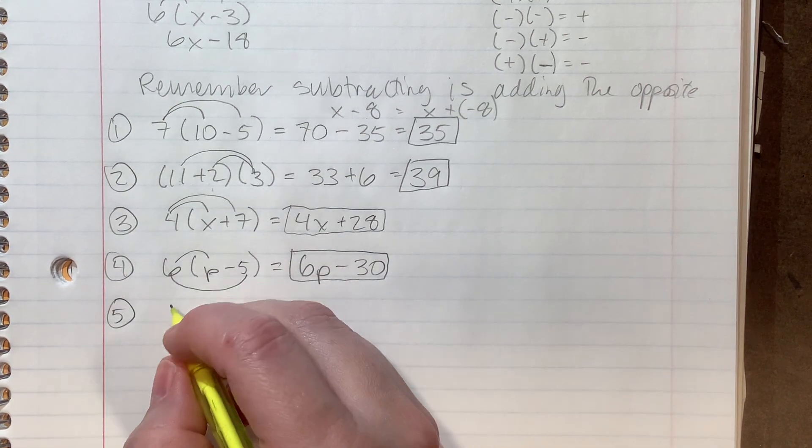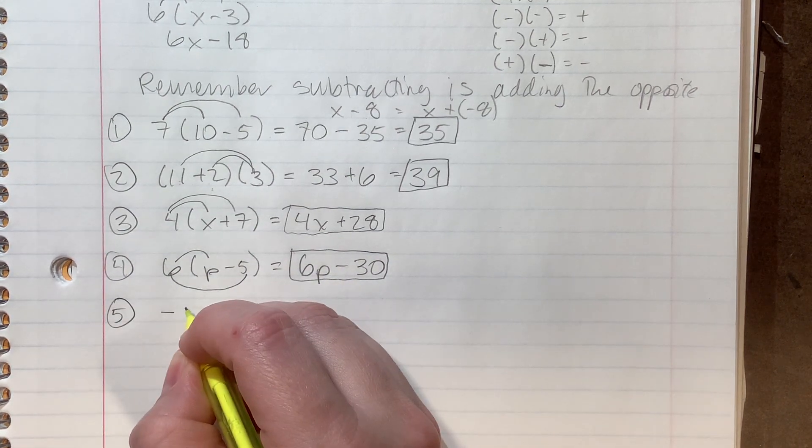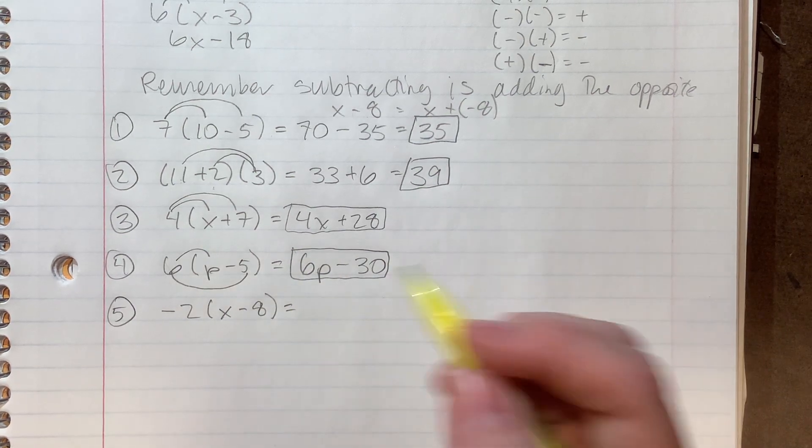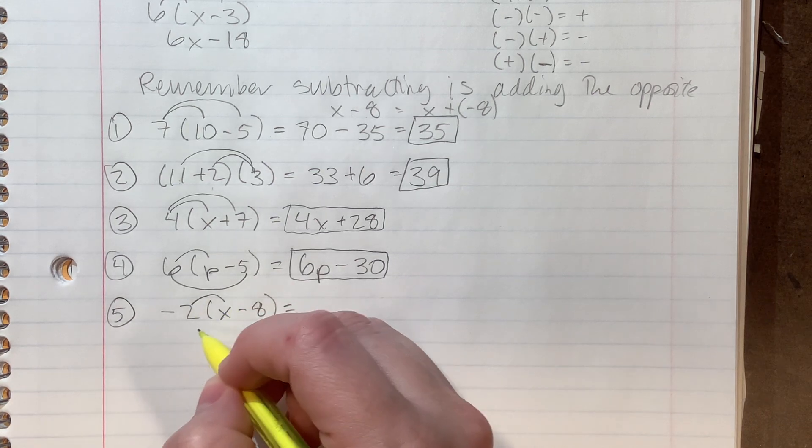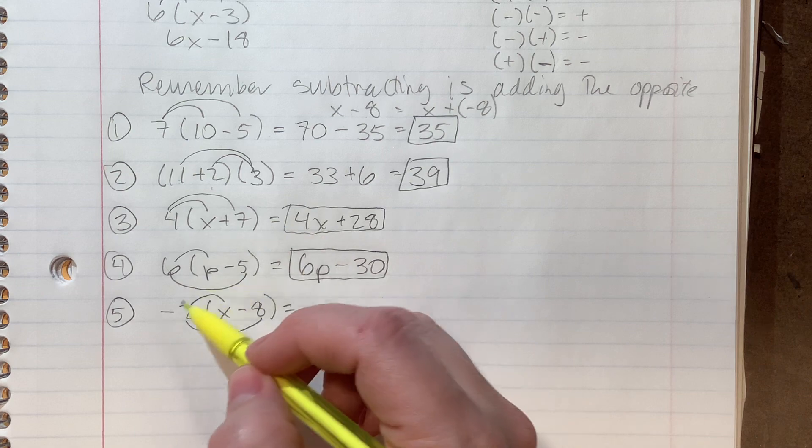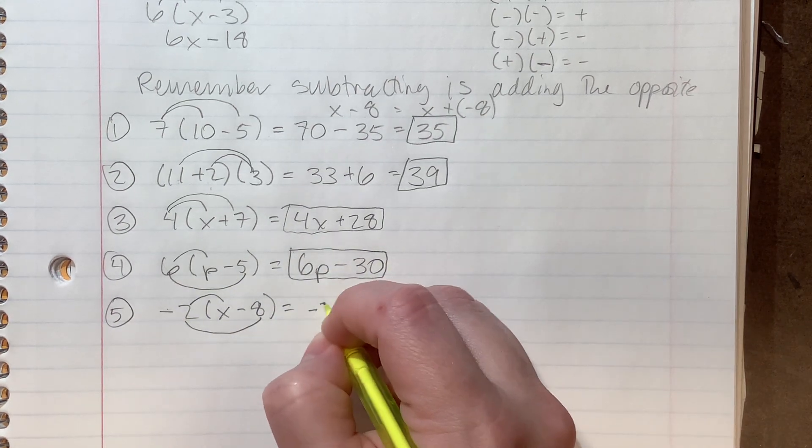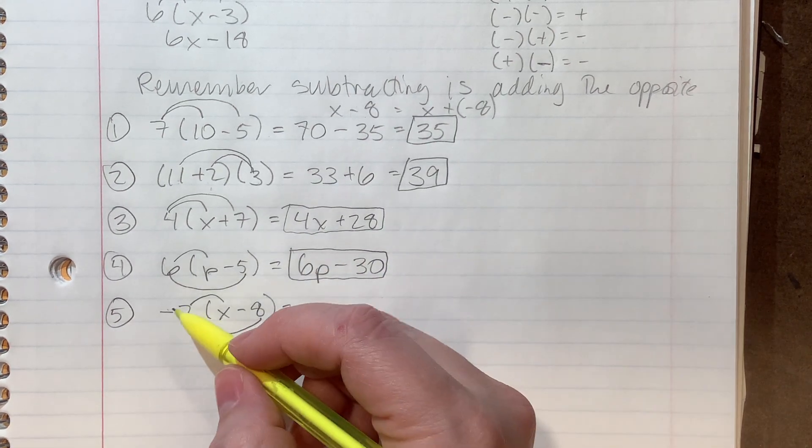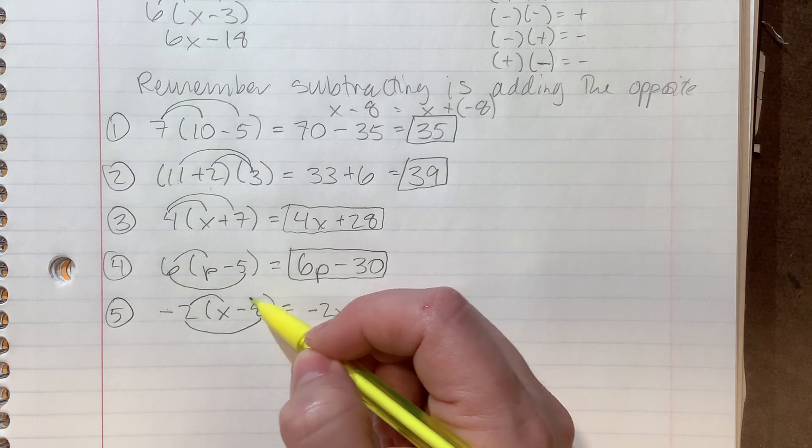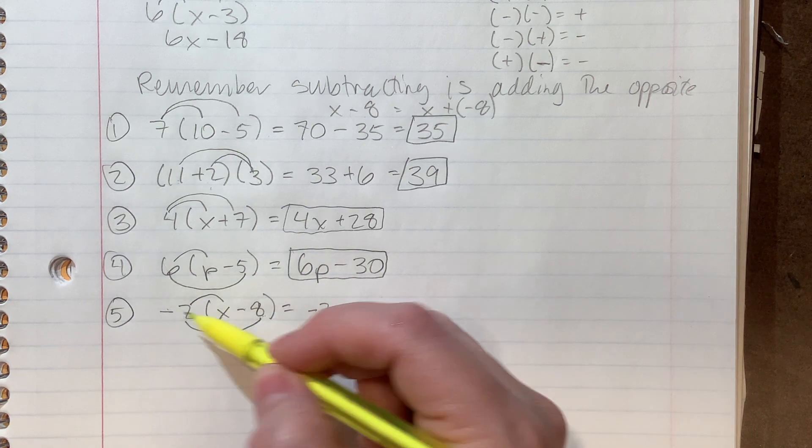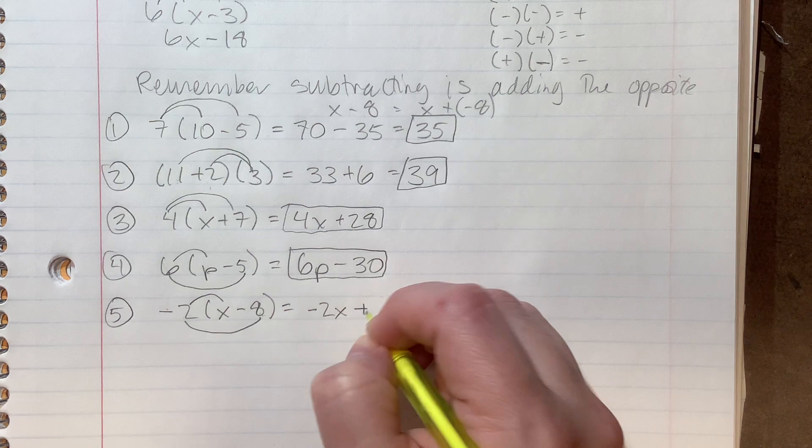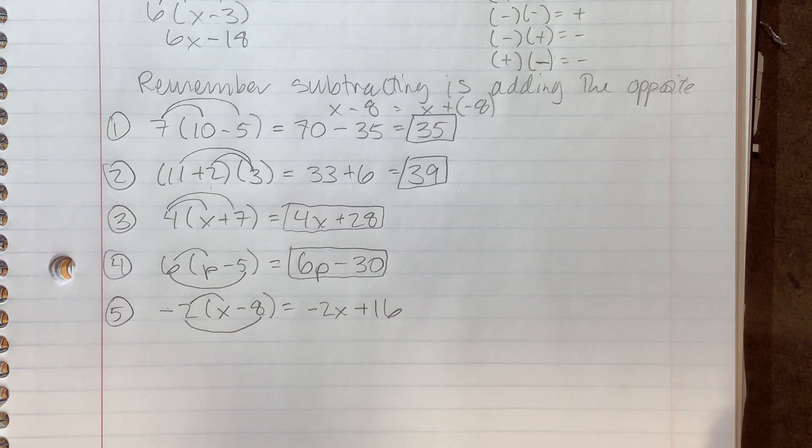Now this is what it's going to look like if you have a negative on the outside. Negative two times x minus eight. We have to do the negative two times both of the numbers. Don't lose your negative. So negative two times x is negative two x. And negative two times, again, remember that subtract is really a negative attached to that number. So really, it's negative two times negative eight, which is positive 16.